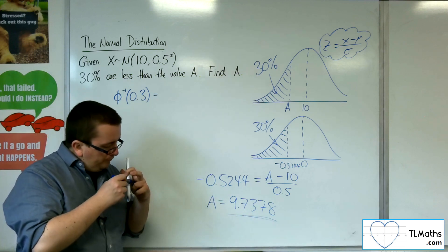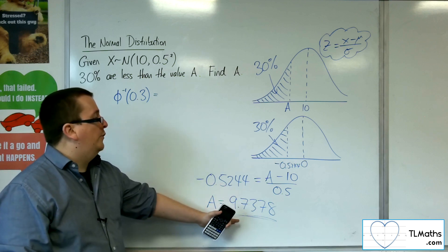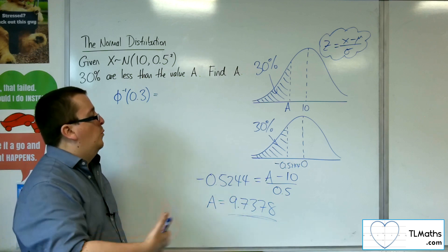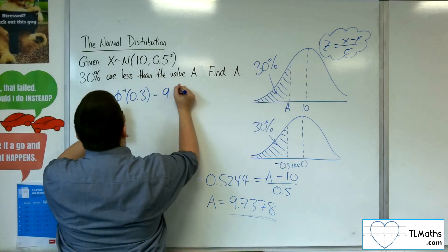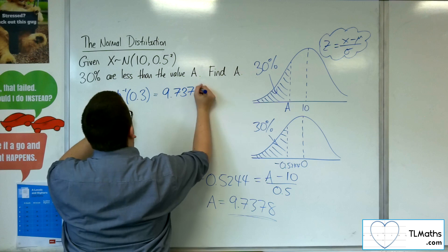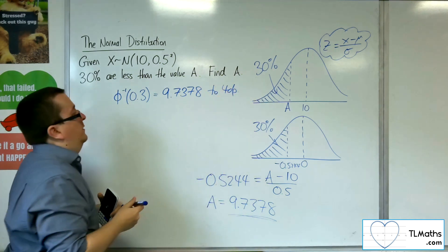So, you can use your calculator to work backwards to get those values as well as and when you are required. So we can get directly 9.7378 to 4 decimal places.